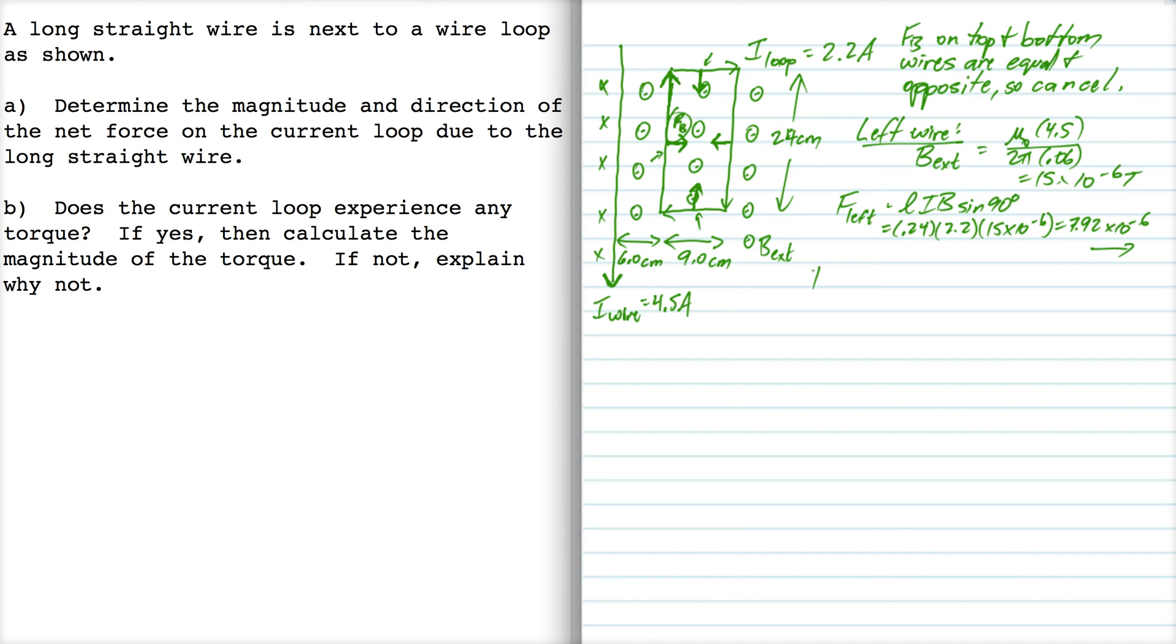Now let's consider the right hand wire. The external magnetic field acting on the right hand wire is mu naught times 4.5 divided by 2 pi. Now this distance is 0.15, so that works out to be 6 times 10 to the minus 6, somewhat less over here.